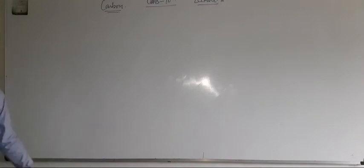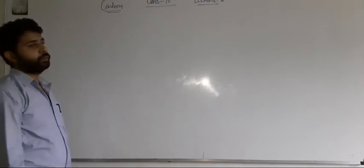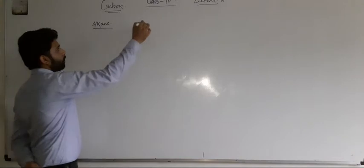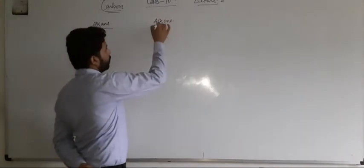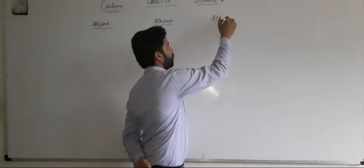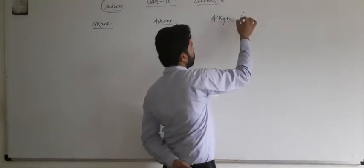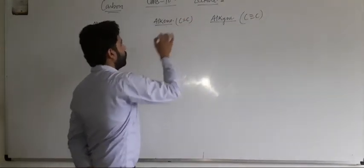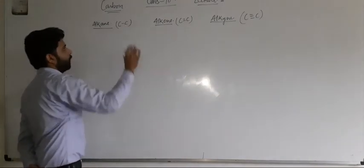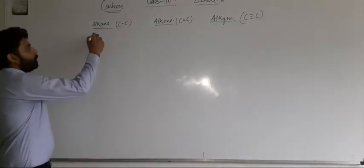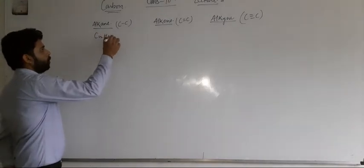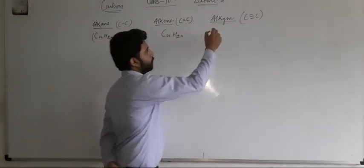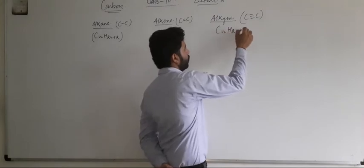In the last lecture, we discussed the formulas of alkane, alkene, and alkyne. Alkyne is carbon triple bond with carbon, alkene is carbon double bond with carbon, and alkane is carbon single bond with carbon. The general formulas are CnH2n+2 for alkanes, CnH2n for alkenes, and CnH2n-2 for alkynes.